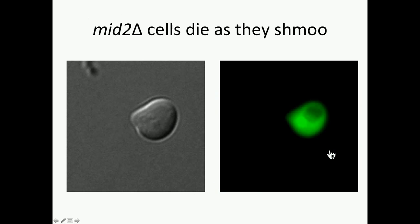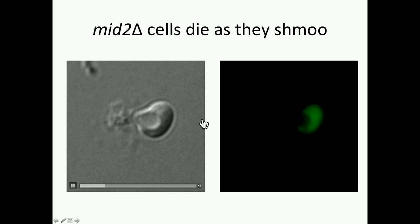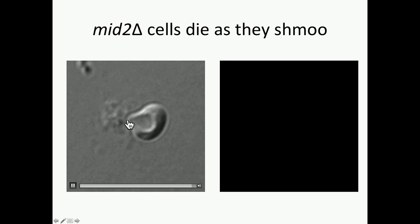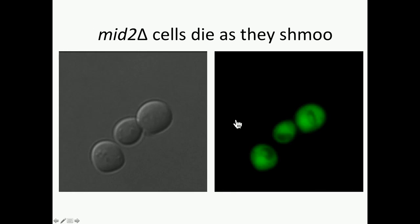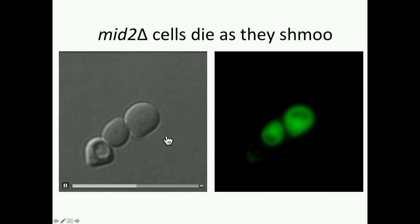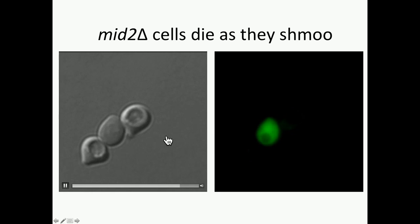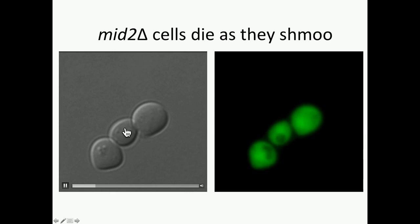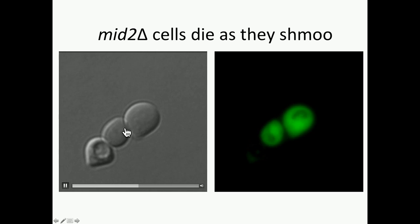We can use live imaging to look at this as well. What you're going to see is a cell that schmoos — focus on this schmoo tip — one shown with cytoplasmic GFP. You can see this blebbing out of the cytoplasmic contents, which happens at the same time as the loss of cytoplasmic GFP. Looking at the top and bottom cells here, you can see that you lose this cytoplasmic GFP as these cells start to schmoo, indicating that they've died. This is the phenotype of a mid2 deletion cell.